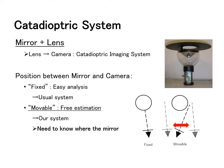In catadioptric system, there are two kinds of positions between mirror and camera: fixed and movable. Fixed system makes analysis easy, so fixed system is often used for catadioptric system.